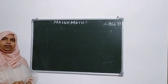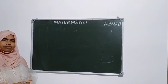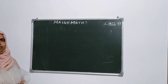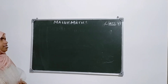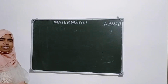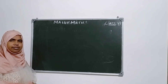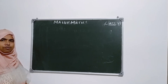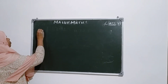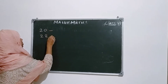Dear children, the next exercise is 3.4, which is from factors and multiples. See the first question: find the common factors of 20 and 28.